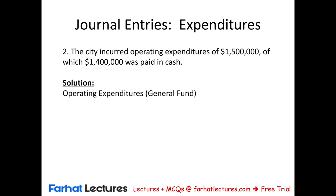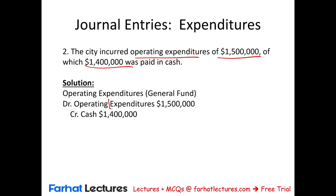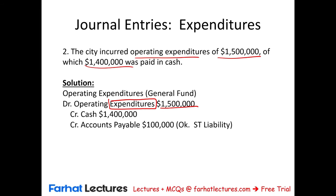Transaction 2: The city incurred operating expenditures of $1.5 million, of which $1.4 million was paid in cash and the remainder incurred on account as accounts payable. Modified accrual allows us to record accounts payable. So we debit operating expenditure $1.5 million, credit cash $1.4 million, and credit accounts payable $100,000 — a short-term liability, which is acceptable under modified accrual. If you don't understand modified accrual, I strongly suggest you go back and review it.